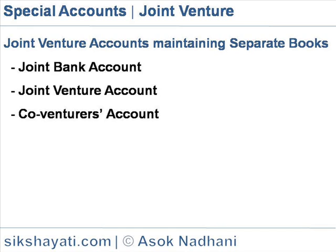Joint Venture Account: This account is a type of trading and profit and loss account prepared for computation of Joint Venture Profit. This account is debited for all venture expenses and is credited for all sales or collections. Co-venturers Account: Venturers' contribution of cash, goods or venture expenditure and direct payment received are entered in this account.